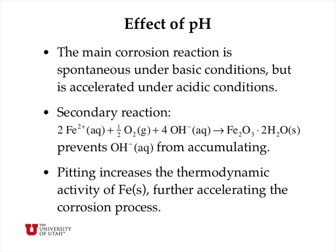The main corrosion reaction is spontaneous with a positive cell potential under basic conditions, but it's actually accelerated under acidic conditions because hydroxide appears in the products. If you have acid present, that decreases the hydroxide concentration and increases the driving force for reaction, according to Le Chatelier's principle. To make matters worse, there is a secondary reaction of iron ions with oxygen and hydroxide ions — all products of the main reaction — to form iron oxide hydrate, which is rust. This prevents hydroxide and iron ions from accumulating on the surface and drives the main reaction even further toward products.